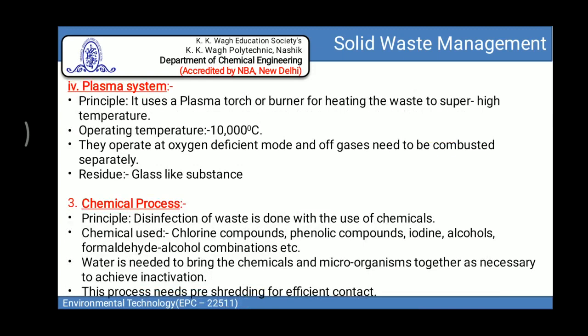The next thermal process is the plasma system, which operates at temperatures of 10,000 degrees Celsius. A plasma torch or burner heats the waste to super-high temperatures. It operates in oxygen-deficient mode, off-gases need to be treated separately, and the residue from this process is a glass-like substance.